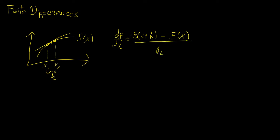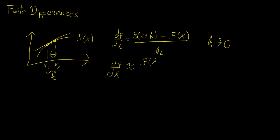You know that the derivative is essentially just the limit of this expression, written as the limit as h goes to zero. As you make the spacing between those two points much smaller, those points are going to coincide and become the same point, giving you the instantaneous rate of change. Now, when you drop the limit, you essentially approximate the derivative by that expression, which is what we call a finite difference, dividing by a finite width h.